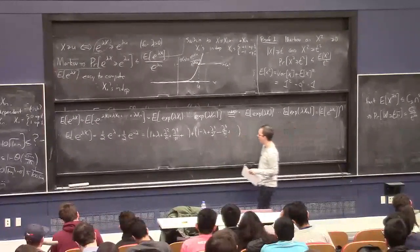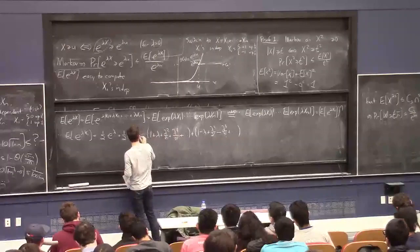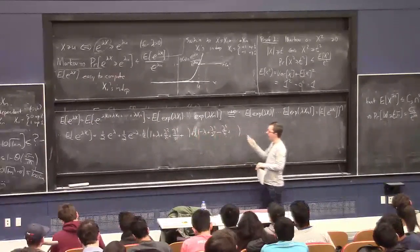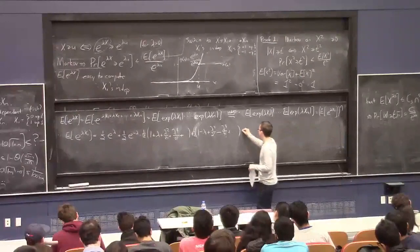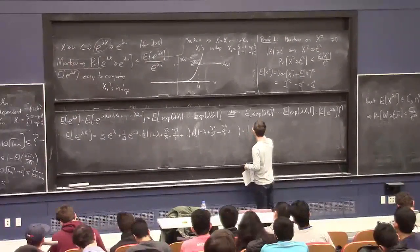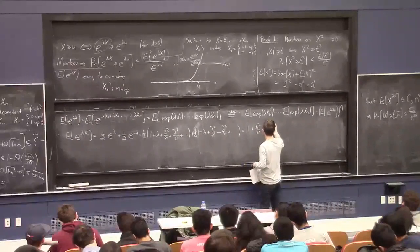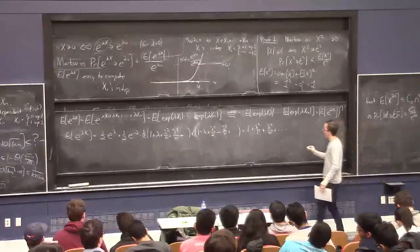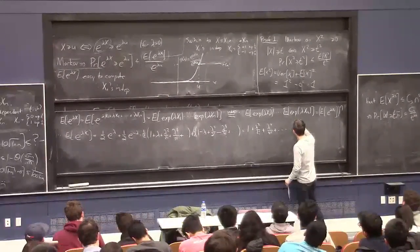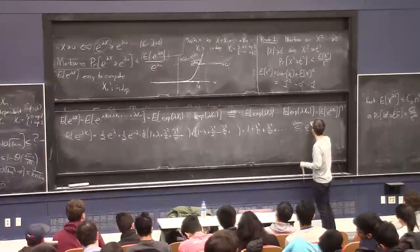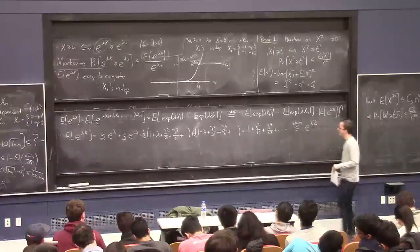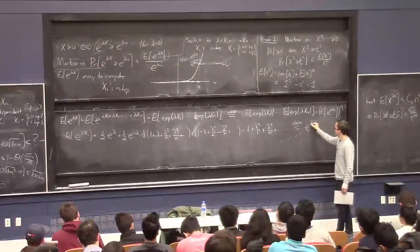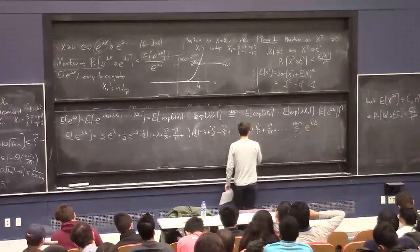Some people would call this cosh lambda, but let's use the Taylor expansion of e to the lambda. The average of e^lambda and e^{-lambda} is 1 plus lambda squared over 2 factorial plus lambda to the fourth over 4 factorial plus dot dot dot — the odd powers cancel and the even powers are the same. Now here's one slightly weird move: I claim this is at most e to the lambda squared over 2.